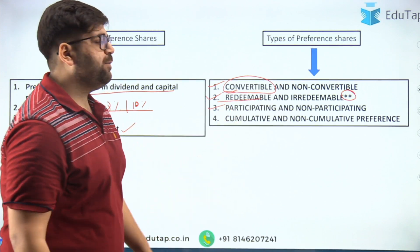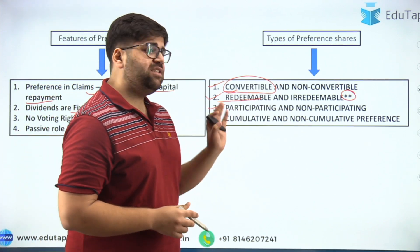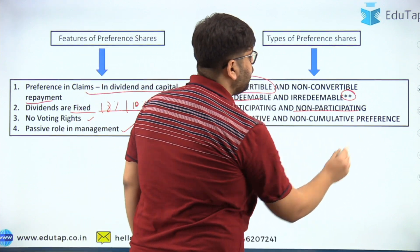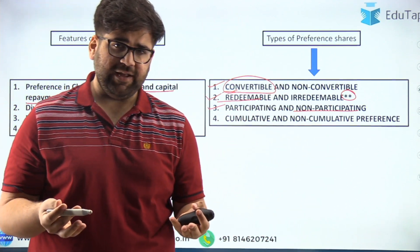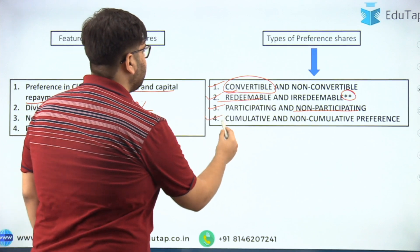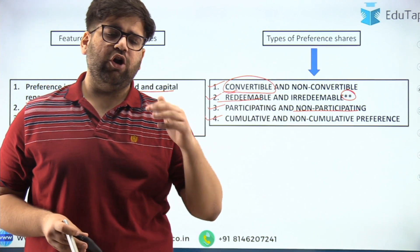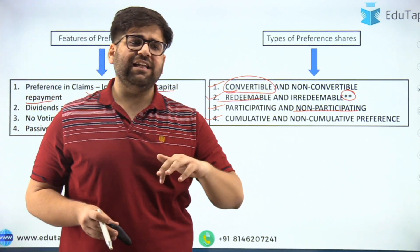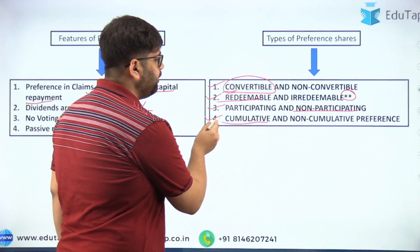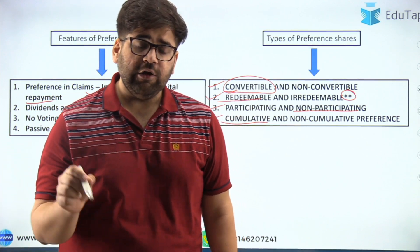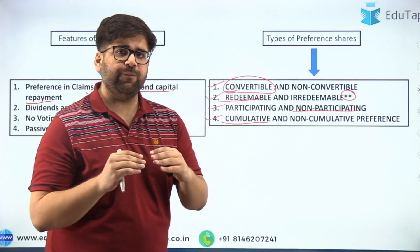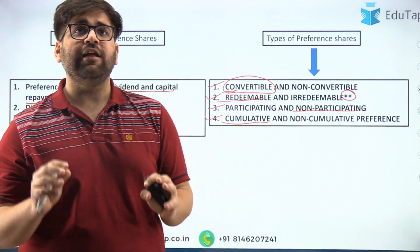Third, participating and non-participating preference shares — under participating preference shares you can take part in the extra profits of the company, but under non-participating you cannot share in extra profits, which are reserved for equity shareholders. Fourth, cumulative and non-cumulative — if a company has not earned a profit in a particular year, they can withhold dividend from preference shareholders. However, if the shareholder holds cumulative preference shares, the company must pay back the dividend for those years where profits were zero. In cumulative preference shares, you receive dividend every year irrespective of profits.